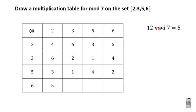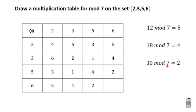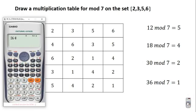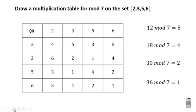Now the last row. 6 × 2 is 12, and 12 mod 7 is 5 — subtract 7 from 12 to get 5. 6 × 3 is 18, and 18 mod 7 is 4 — subtract 7 from 18 to get 11, then 7 from 11 to get 4. 6 × 5 is 30, and 30 mod 7 is 2. Finally, 6 × 6 is 36. Subtracting 7 repeatedly: 36 → 29 → 22 → 15 → 8 → 1. So 36 mod 7 is 1.